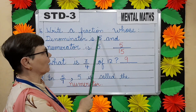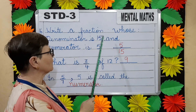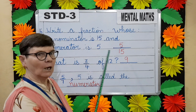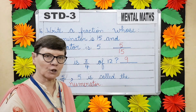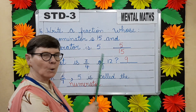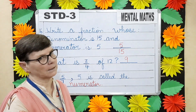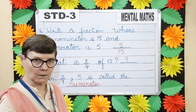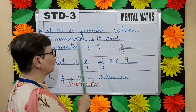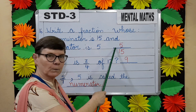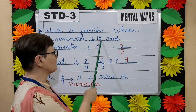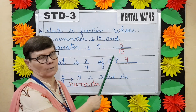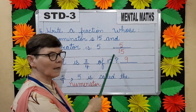Question number sixteen. Write a fraction whose denominator is fifteen and numerator is five. In a fraction, the number above the line is called the numerator and the number below the line is called the denominator. The numerator is five, written above the line, and denominator is fifteen, written below the line. So the fraction is five by fifteen.